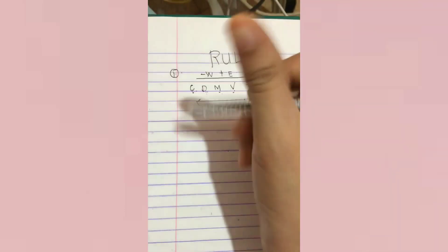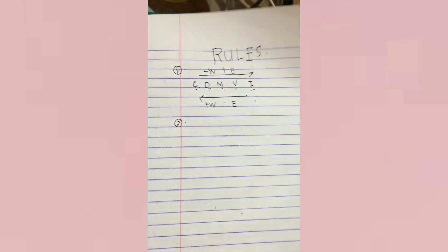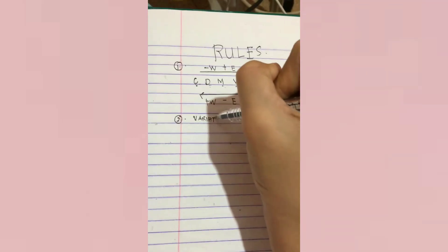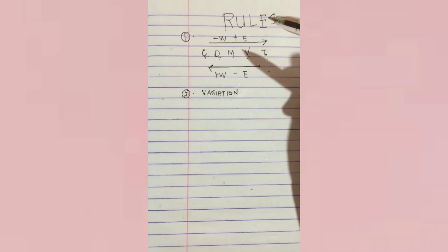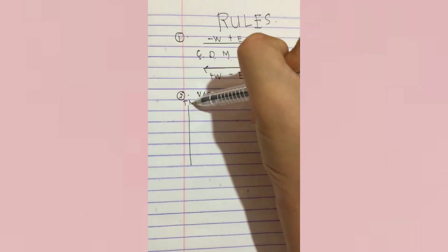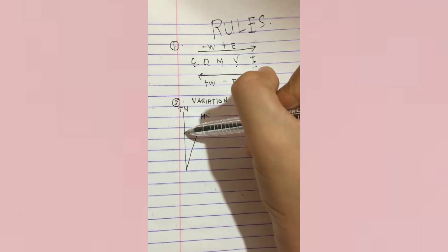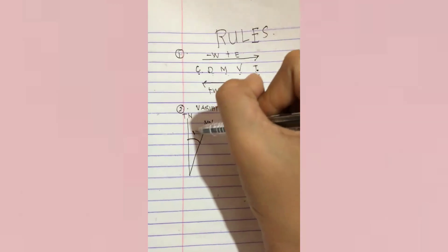The second rule is about calculating the variation. Variation is the angle between true north and magnetic north — this angle is what we call the variation.